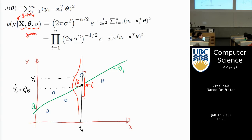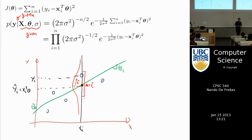Yes, the assumption of the distribution of y does affect the maximized function. By choosing the distribution you make a strong commitment to what you believe the model is. For example, if you assume a Gaussian, you know how a Kalman filter works — and if you fly an aircraft, it would crash without one.